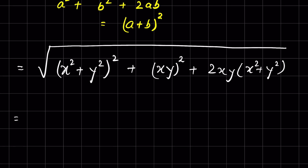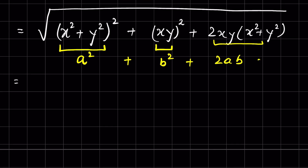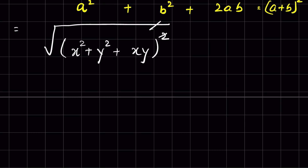Taking (x² plus y²) as a single term 'a' and xy as 'b', we again have the form a² plus b² plus 2ab, which equals (a plus b)². So the expression under the square root becomes (x² plus y² plus xy) whole squared. Removing the square root and the square gives x² plus y² plus xy.